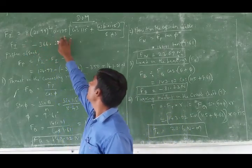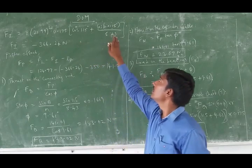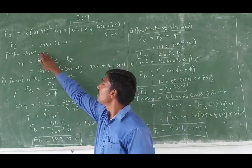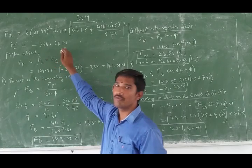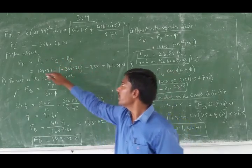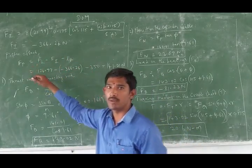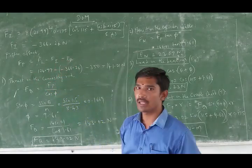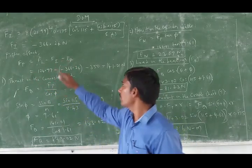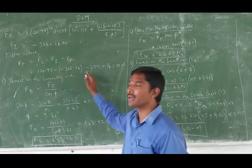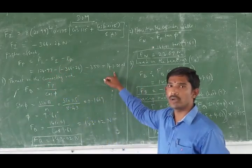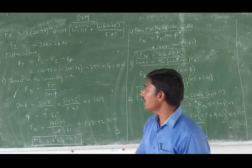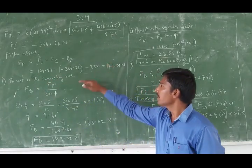Substituting values: mass, omega squared, r, cosθ, and cosθ/n. So FI equals minus 366.24 Newtons. Then FP equals F1 minus FI minus RL. Substituting gives approximately 1101 Newtons for the piston effort.